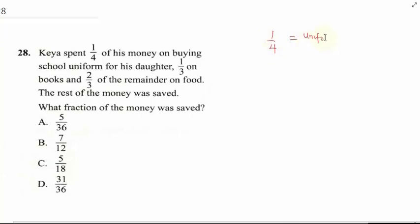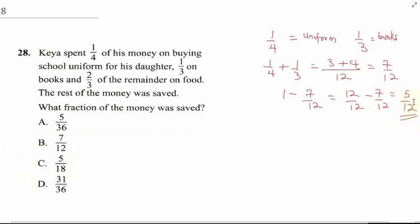To solve this, he spent 1/4 on uniform and 1/3 on books. The total spent so far is 1/4 plus 1/3, which gives us an LCM of 12. You have 3 plus 4, so this is going to give us 7/12. Now we need to get the remainder, which would be 1 minus 7/12, which equals 12/12 minus 7/12, so this gives us 5/12. This is the remainder.